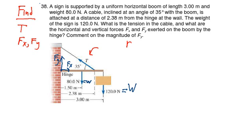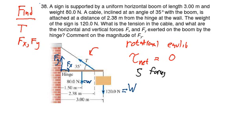This is a problem that has to do with rotational equilibrium, so we will use the condition that the net torque acting on the boom equals zero. Looking at the force diagram, we count five forces, but there are only three torques. The weight of the sign, the weight of the boom, and the tension are the only forces that cause torque, because the two reaction forces act at the pivot point and their moment arm r is equal to zero.